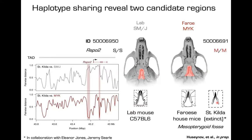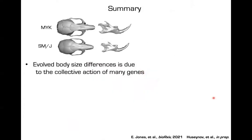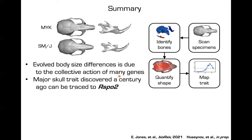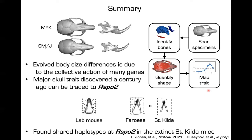The R-spondin 2 double knockout is lethal around birth, so we can't look at adult phenotypes directly. We obtained heterozygous mutants called 'footless' and looked at those genotypes alongside wild-type littermates. Wild-type littermates resemble the lab mouse phenotype, and there was a narrowing of the mesopterygoid fossa in the heterozygotes. Recall that the St. Kilda mouse and Faroese mouse seemed to share this morphological feature. The St. Kilda mouse went extinct in 1926. We obtained museum samples from Jeremy Searle and compared the genome in the topological associating domain around R-spondin 2.